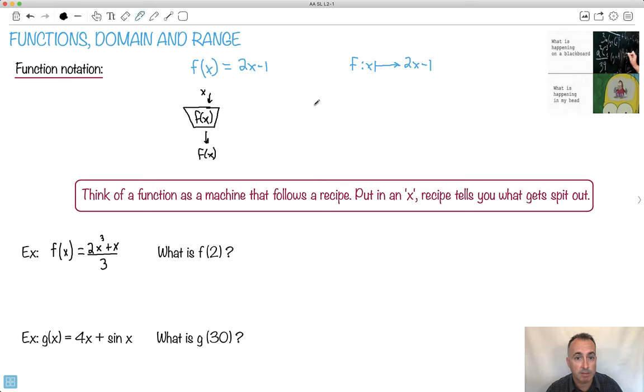So let's think of it maybe with a better example. Let's say I put in this 2x minus 1. This could be my recipe. Let's say I drop in an x, but this time I make my x equal to 2. And I drop that in there. So I put a 2 in there. That means everywhere there's an x, I replace it with 2, which means 2 times 2 is 4, 4 minus 1 is 3. So what comes out of here would be a 3.